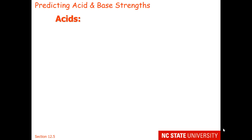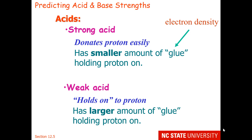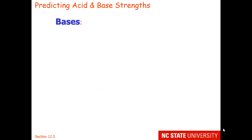According to the Bronsted definition, acids have a particular job. A strong acid will donate its proton easily, so it has a small amount of glue holding the proton on to the rest of the acid. You can think of the glue as electron density. A weak acid, on the other hand, doesn't want to give up its proton, so it holds on to the proton and has a larger amount of glue holding the proton on.